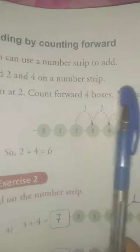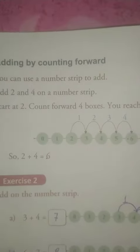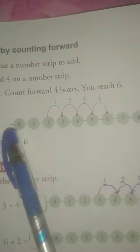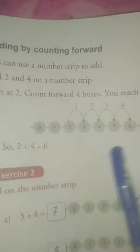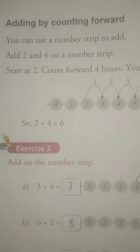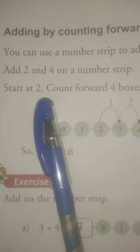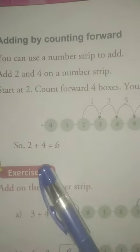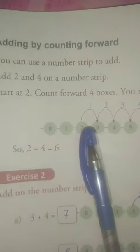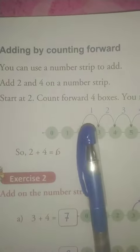Add 2 and 4 on a number strip. अभी आप लोगों को lines ड्रो करके नहीं add करना है. इस chapter में आप लोगों को इस number strip का यूज करके add करना है. समझ में आया बात? तो देखिए आप लोग start at 2. अभी 2 plus 4. 2 और 4 को plus करना है तो हम लोग कहां से start करेंगे? We will start at 2.